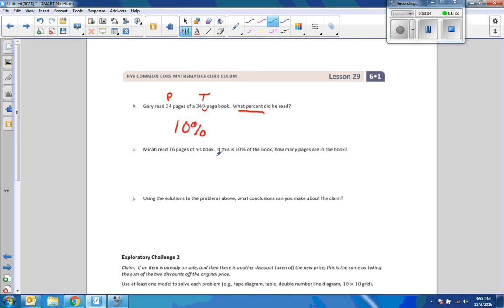Now, this one says Michael read 16 pages of his book. If this is 10% of the book, how many pages are in the book? So, we're given a 10%. We are given a portion of the book he read. How many pages are in the book? That is a total. We know the portion. We're looking for the total. We're moving the decimal one place to the right. So, I'm going to take that 16 and call it 16.0, and move that decimal one place to the right. So, my answer is 160 pages.